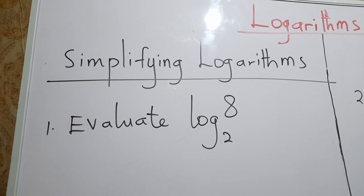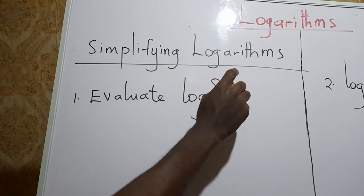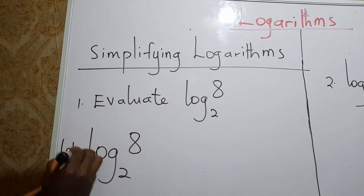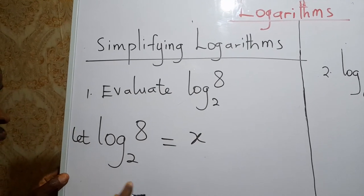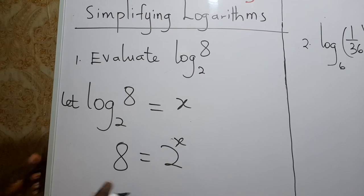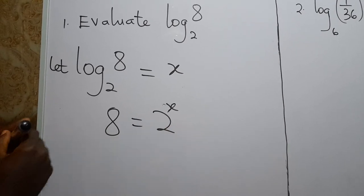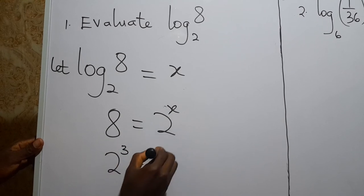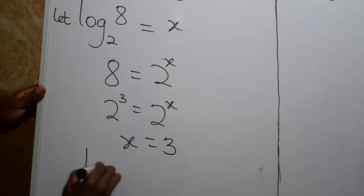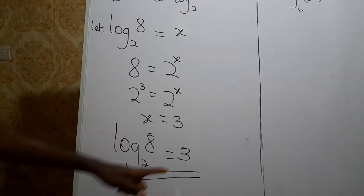To develop the properties of logarithms, we must learn how to evaluate logs without a calculator. For example, evaluate log 8 base 2. Let log 8 base 2 equal x, then 8 equals 2 exponent x. Writing 8 in index form: 8 equals 2 exponent 3, so 2 exponent 3 equals 2 exponent x. Since the bases are the same, we equate exponents: x equals 3. So log 8 base 2 equals 3.